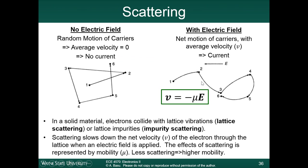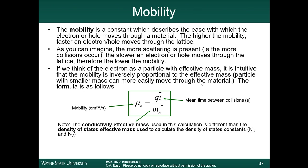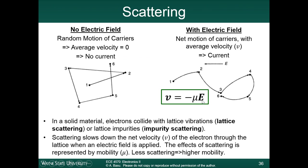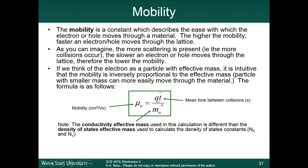We talked about the concept of mobility. The velocity of the electron is this constant mobility times the electric field. There are two mechanisms which slow down the electron: lattice vibrations, which is called lattice scattering, or lattice impurities, which is called impurity scattering. The formula for mobility is q times the mean time between collisions divided by the effective mass of the particle. In the case of electron mobility, we'd use the effective mass of the electron.